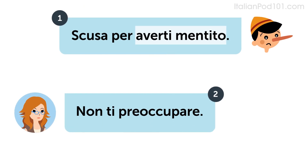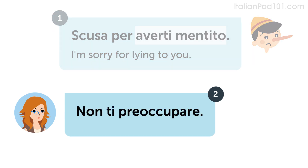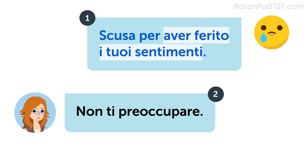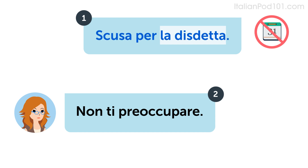Let's look at some examples. Listen and repeat or speak along with the native speakers. Scusa per averti mentito — I'm sorry for lying to you. Non ti preoccupare — Don't worry about it. Scusa per aver ferito i tuoi sentimenti — I'm sorry for hurting your feelings. Non ti preoccupare — Don't worry about it.